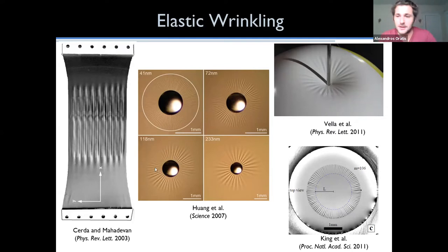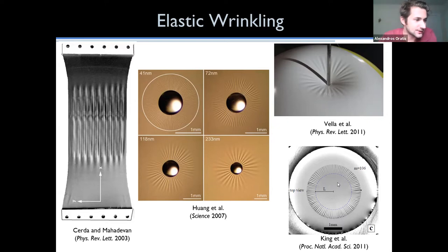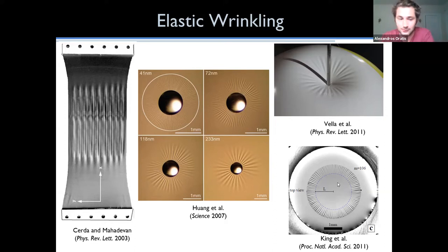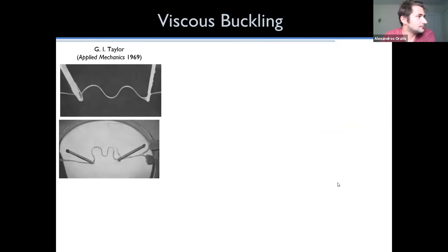Another example is a beach ball: if you poke it, due to the pressure inside, you see a wrinkling pattern forming. Something closely related to our work in terms of structure and physics is when you have a curved water interface and you drop an ultra-thin sheet — nanometrically thin, hundreds of nanometers — on top. Due to surface tension stretching it at the edges, you again observe a wrinkling pattern. Lots of studies have tried to understand the mechanistic models for how stress distribution contributes to how many wrinkles form and where they're located.